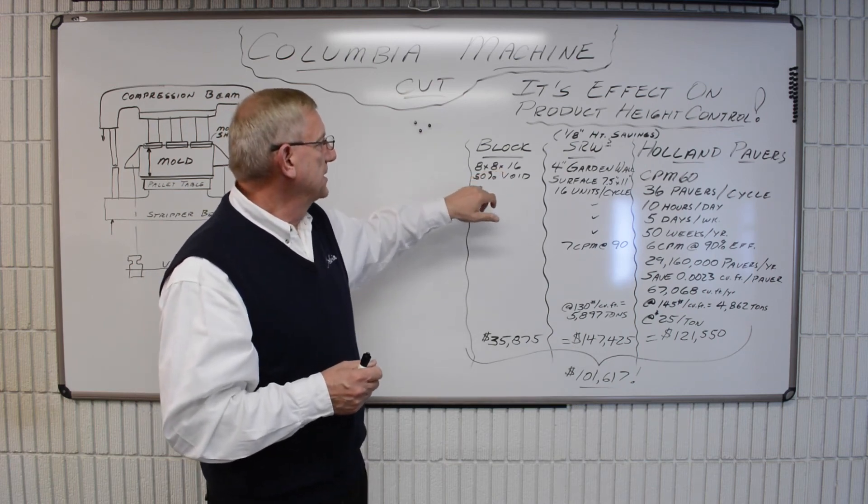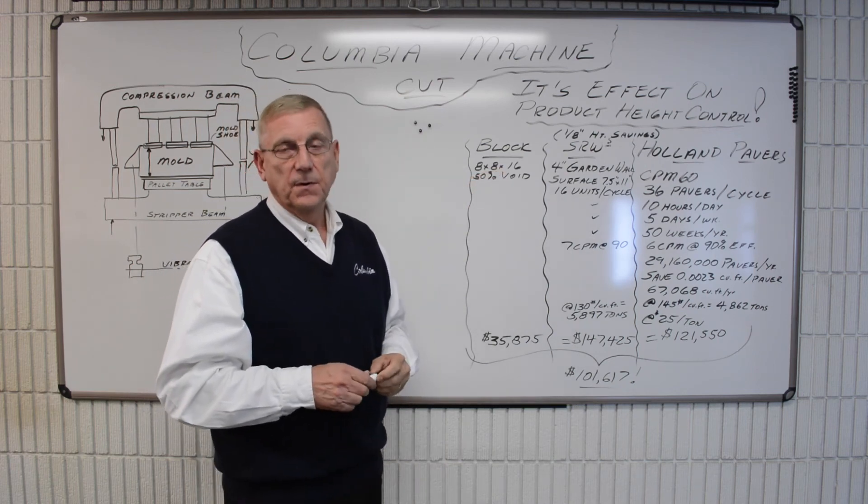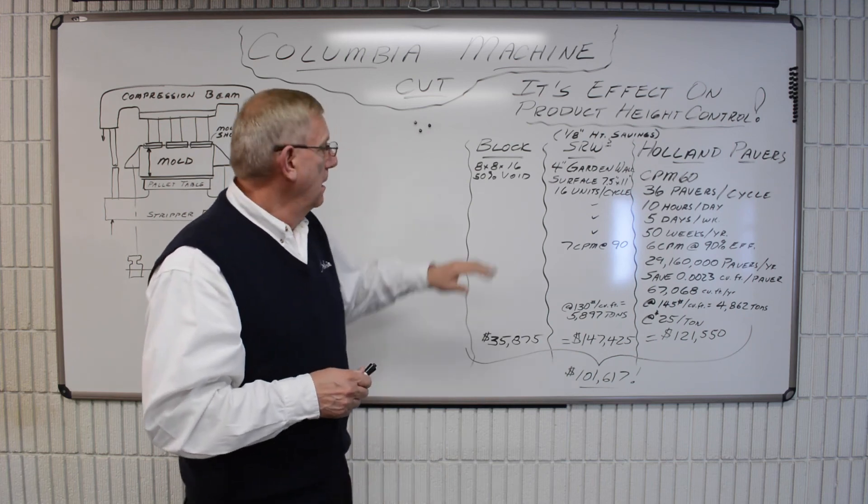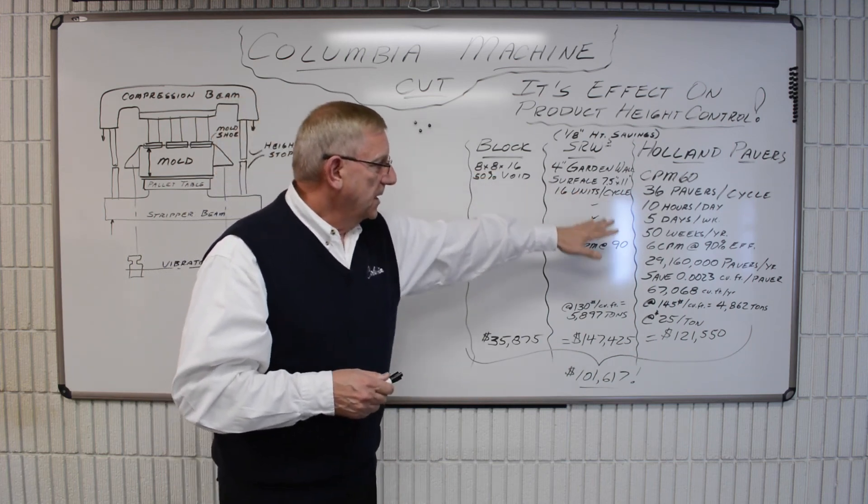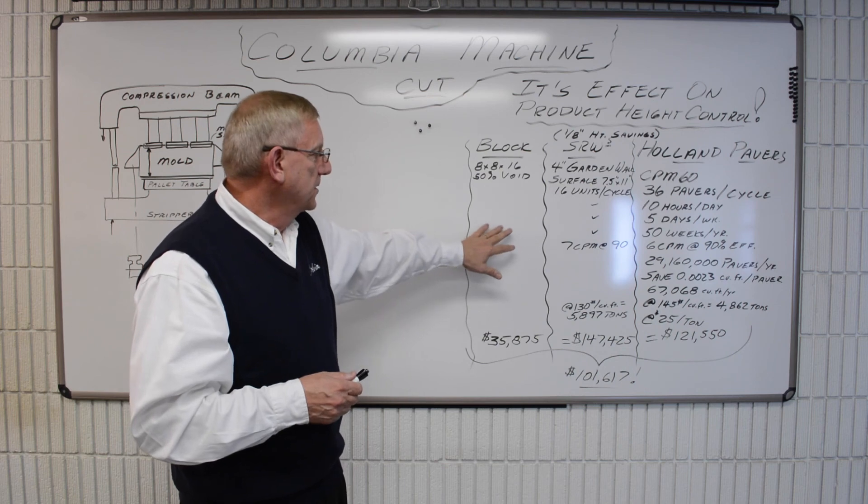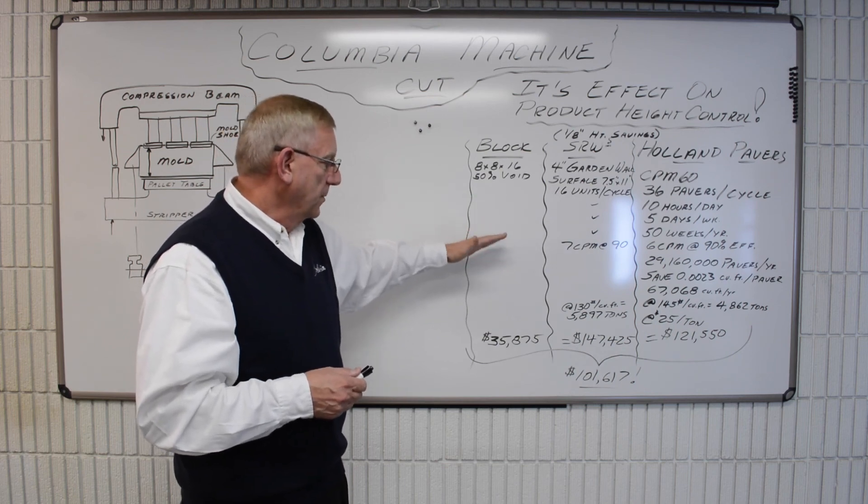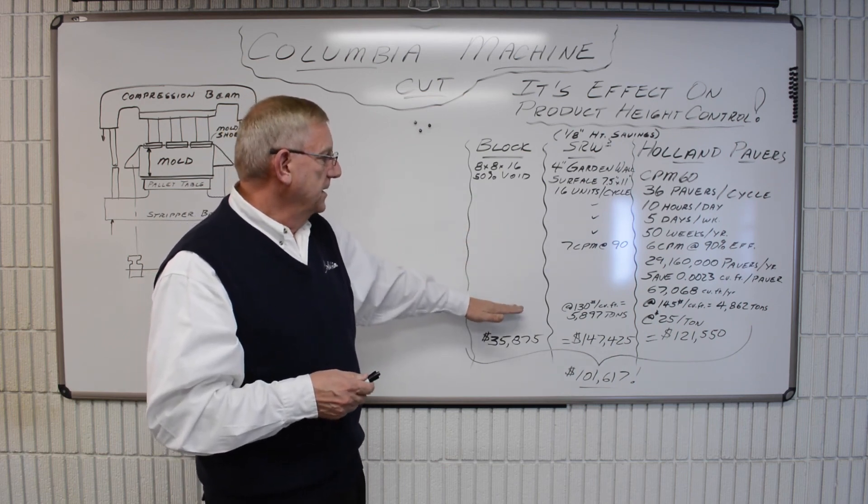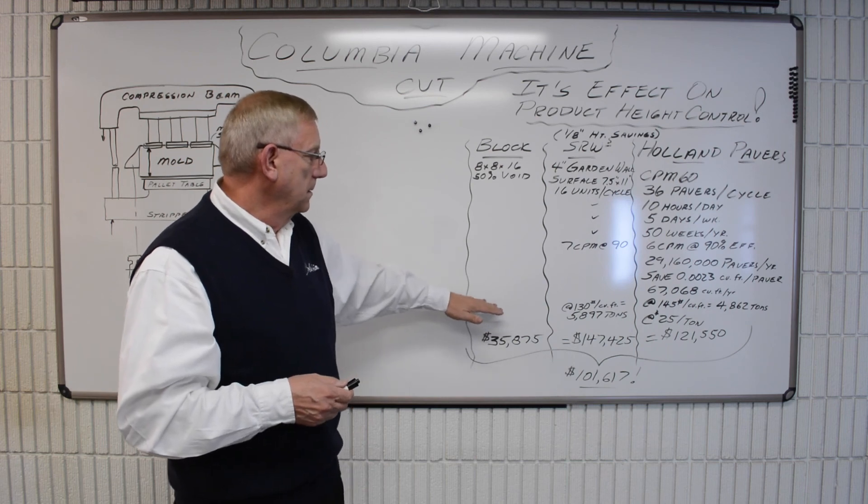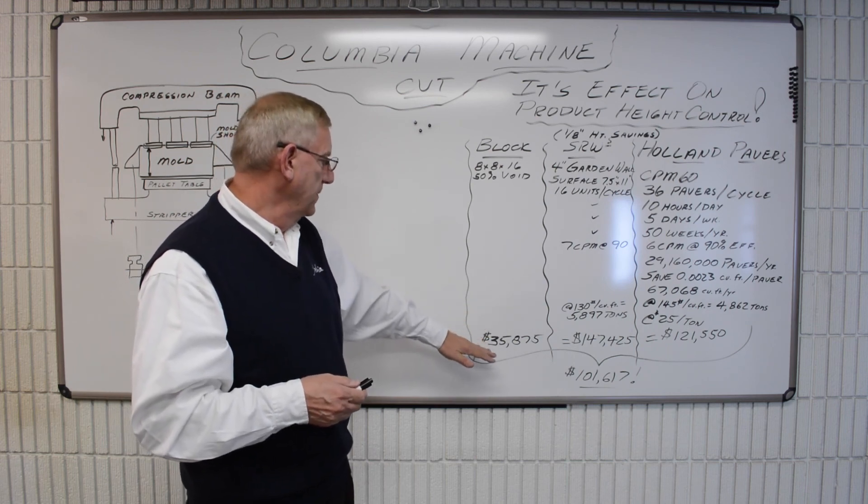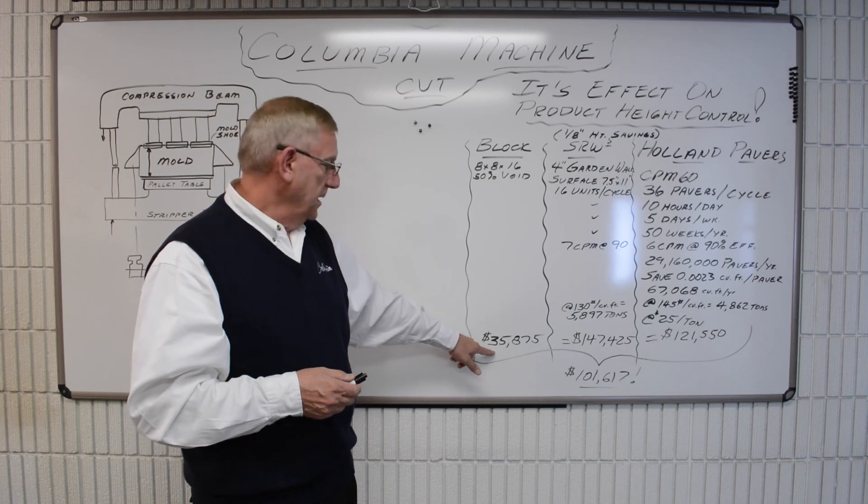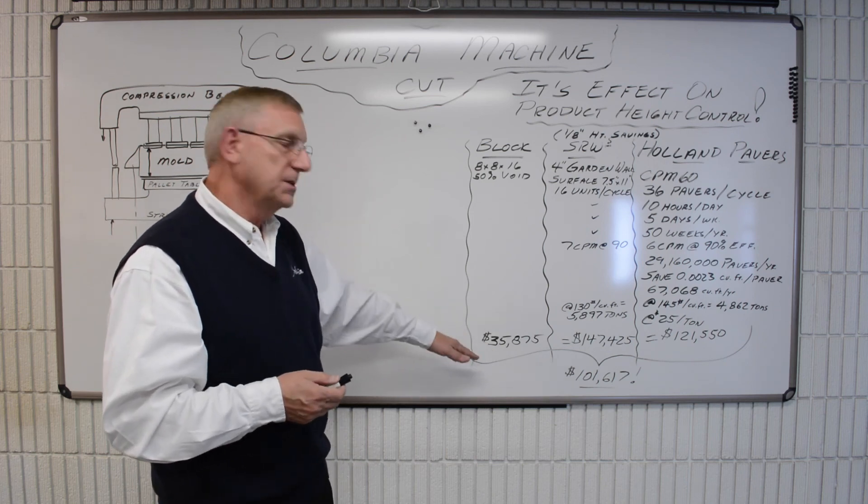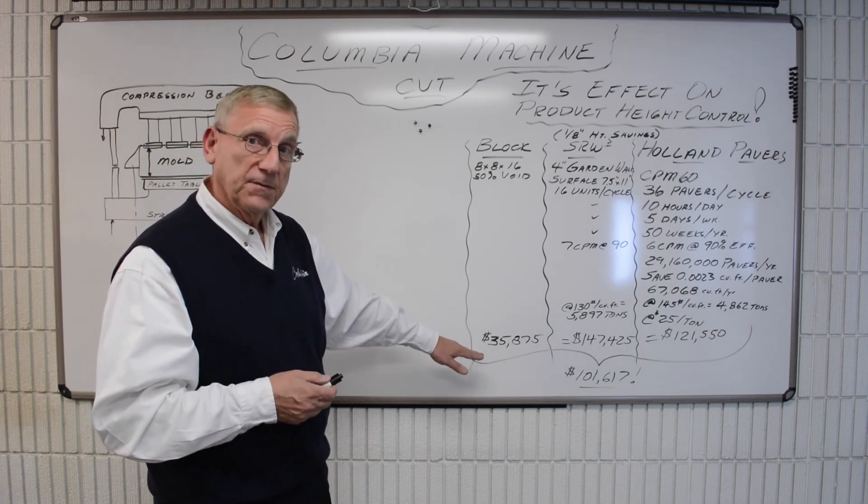But if we looked at 8x8x16 blocks with 50% void content, and we go through the same exercise, all the same factors, same cycle rate, we're trying to be modest here. The density would be even lower, I believe it was 120 pounds per cubic foot. Of course, the savings is a lot less, $35,000-$36,000 a year, but still significant.